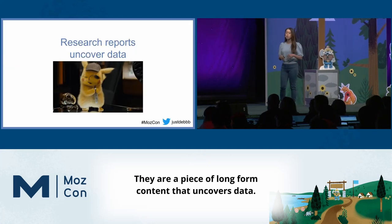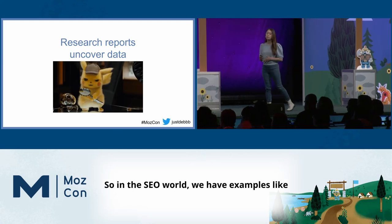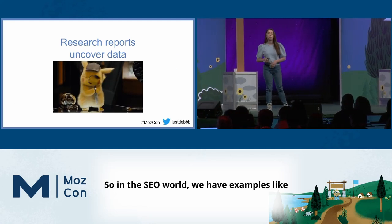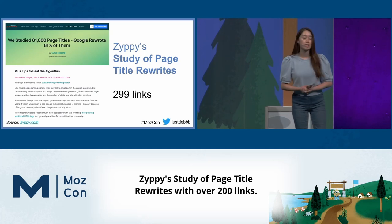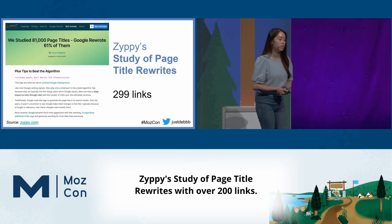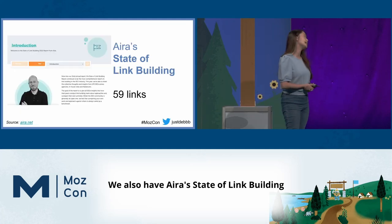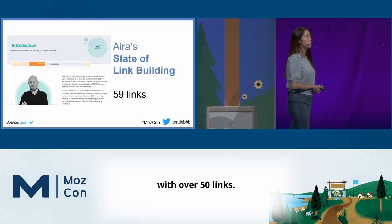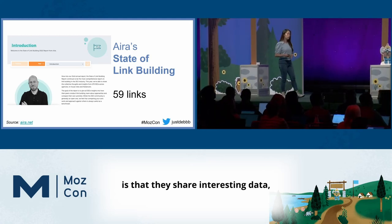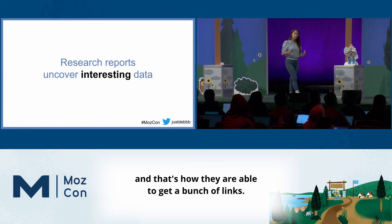So what are the research reports anyways? They are a piece of long-form content that uncovers data. In the SEO world, we have examples like Zippy's study of page title rewrites with over 200 links. We also have ERA's state of link building with over 50 links. And what these reports have in common is that they share interesting data, and that's how they are able to get a bunch of links.